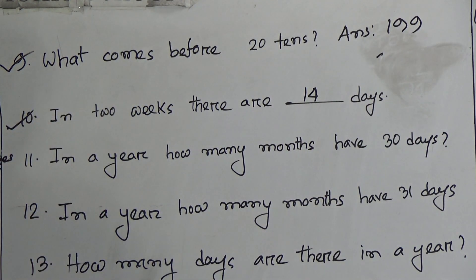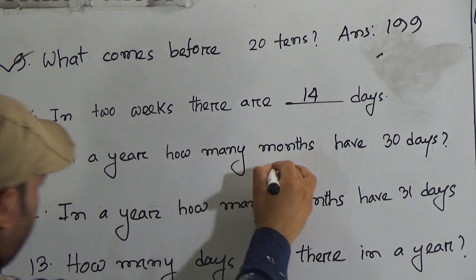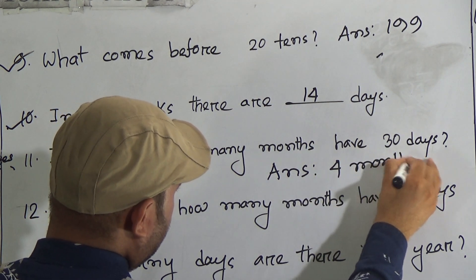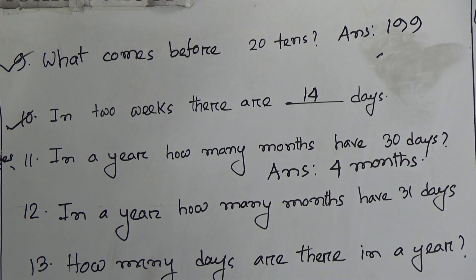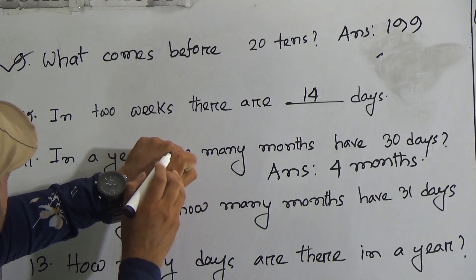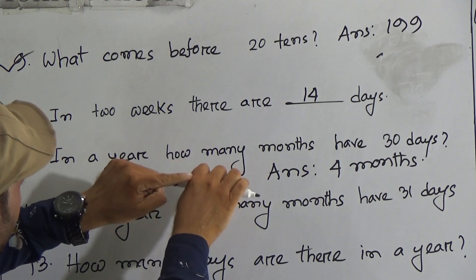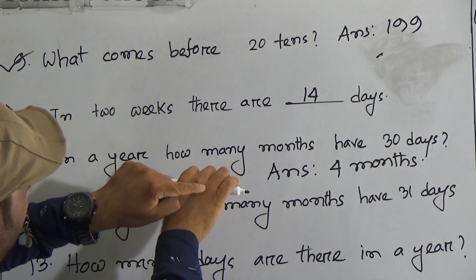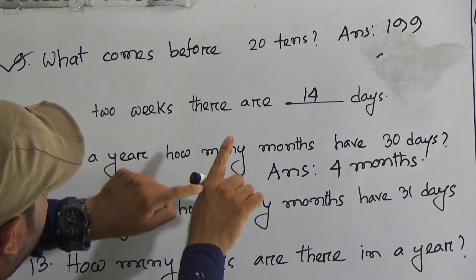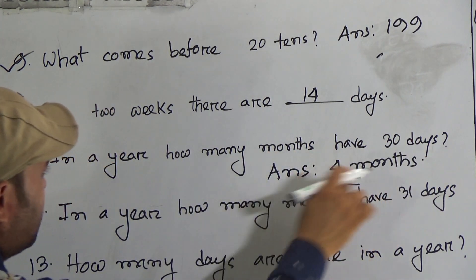Question number 11: in a year, how many months have 30 days? The answer is four months. How can we know? Using the knuckle method — the lower portion of the knuckles represents months with 30 days: January, February, March, April, May, June, July, August, September, October, November, December. In the lower portion there are four months. So four months in a year have 30 days.